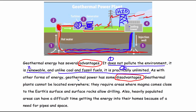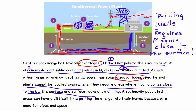As with other forms of energy, geothermal power also has disadvantages. Geothermal plants cannot be located everywhere — they require areas where magma comes close to the Earth's surface, because wells must be drilled down to the magma. A second well then releases the hot water back up to the surface, where it's compressed into steam to turn turbines and generators and produce electricity. Make sure you have everything marked and the notes taken on this reading.